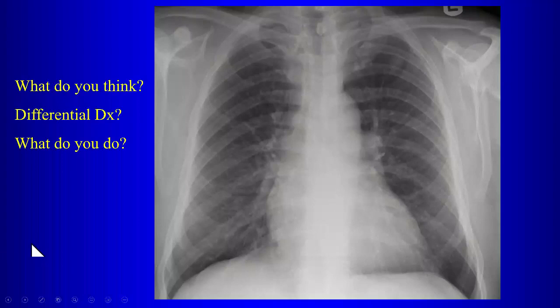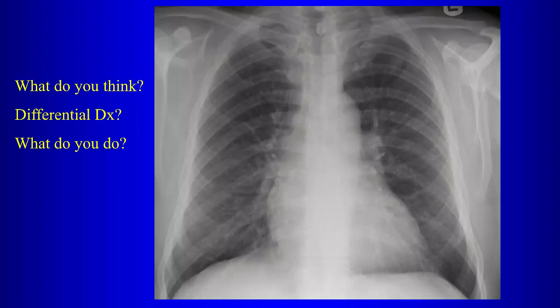Assuming we don't have prior chest radiographs, we do a CT. When doing CT for a solitary pulmonary nodule, you're trying to categorize the nodule into one of two categories: benign or indeterminate. If the nodule has certain features, we classify it as benign — meaning we're done. If it doesn't have those characteristics, it becomes an indeterminate nodule requiring further workup, either follow-up or additional tests.